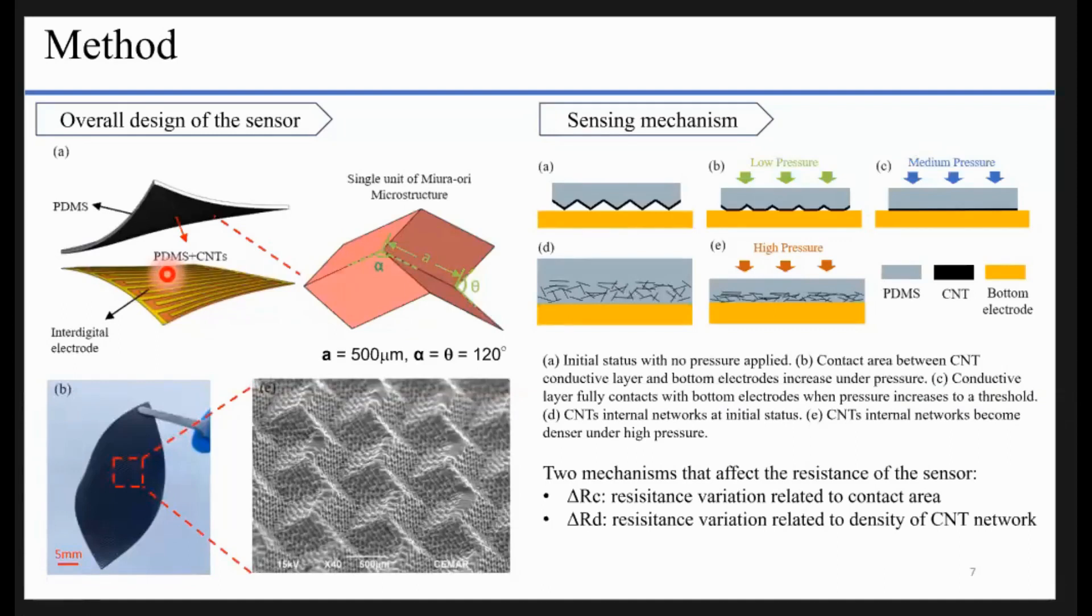If we increase the pressure, at some point, the structure will be pressed to fully flat and contact with the bottom electrode. If we further increase the pressure, this conducting network will also be compressed, and it will also affect the resistance. There are mainly two mechanisms that affect the resistance: variation related to the contact area and variation related to the density of the CNT network.